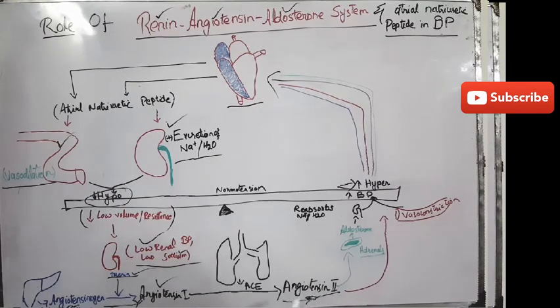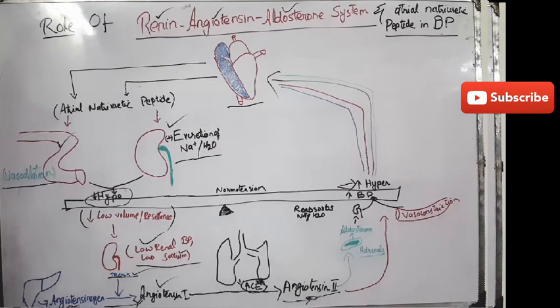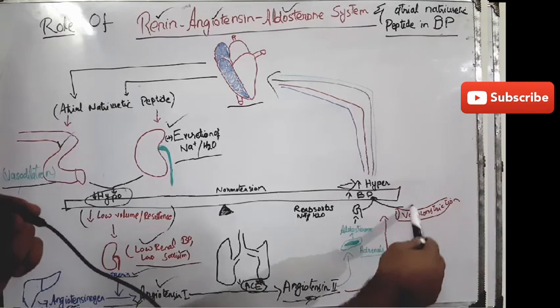This conversion occurs by the action of angiotensin-converting enzyme, which is mostly present in the lungs but can be present in many other tissues. Now this angiotensin II acts on the blood vessels and causes vasoconstriction.